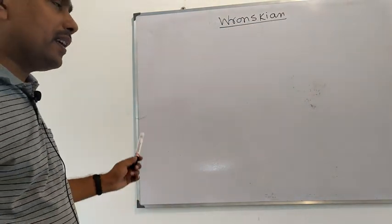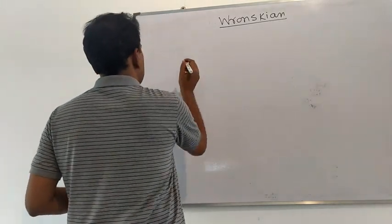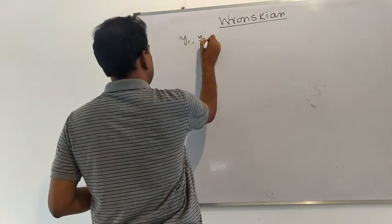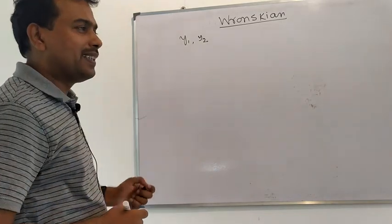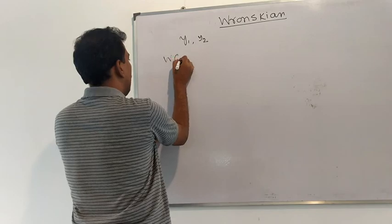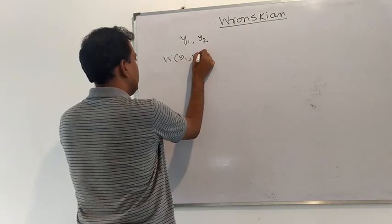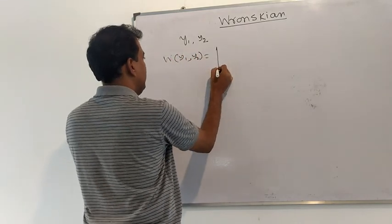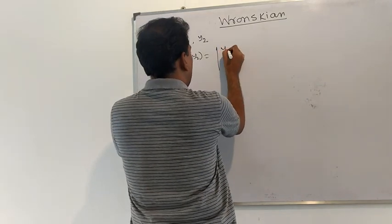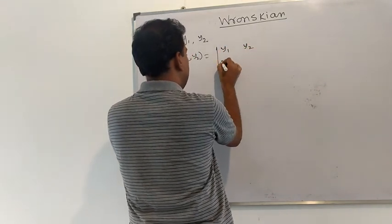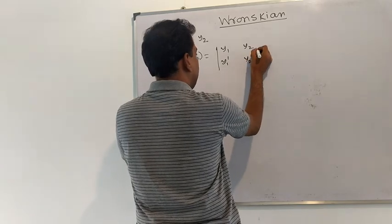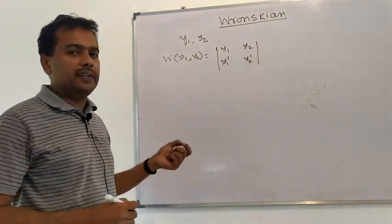Now I will define the Wronskian. Suppose we are given two functions y1, y2 of a single variable x. Then the Wronskian of y1, y2 is defined by a 2×2 determinant whose first row is y1, y2 and whose second row is their derivatives.